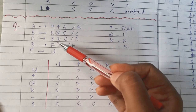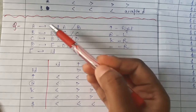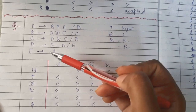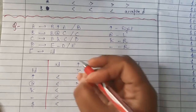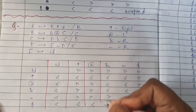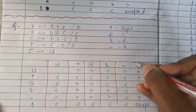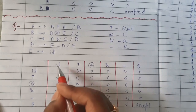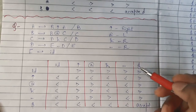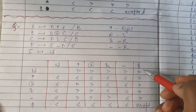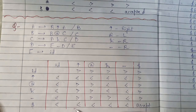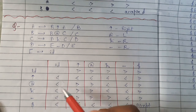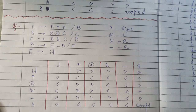In this grammar the operators present are exponential, at-the-rate, percent, and minus. All other symbols like a, b, c, d, e, and id are terminals or non-terminals, not operators. In making the table we write all the operators, and one extra symbol we must append is dollar. So horizontally and vertically we write all the operators plus dollar.